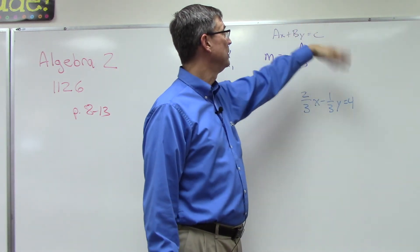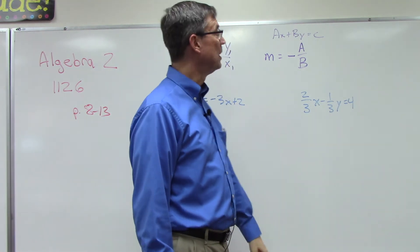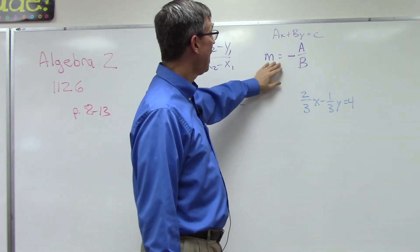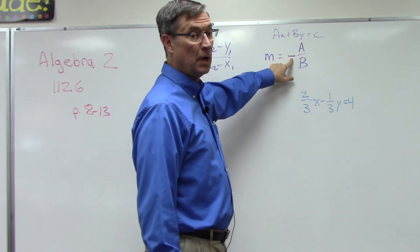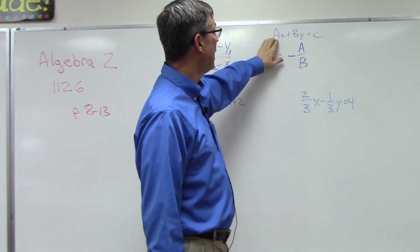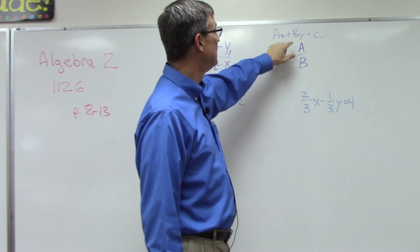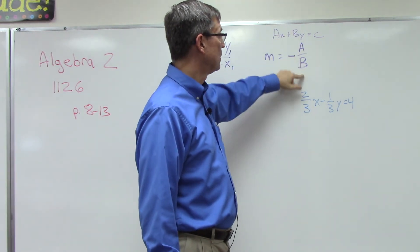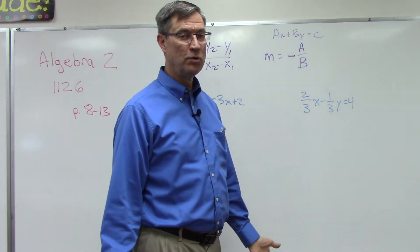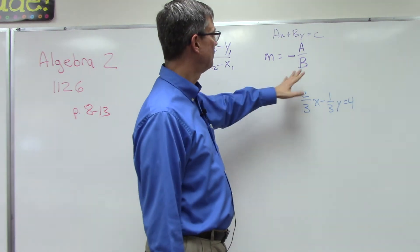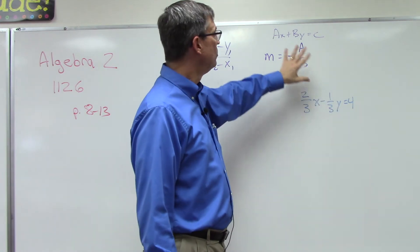The slope happens to be negative, the opposite of whatever the A coefficient is, divided by the B coefficient. We could easily prove why that's so, but let's just for the sake of time use this shortcut.